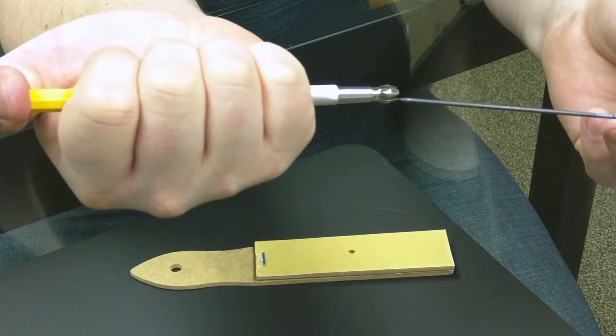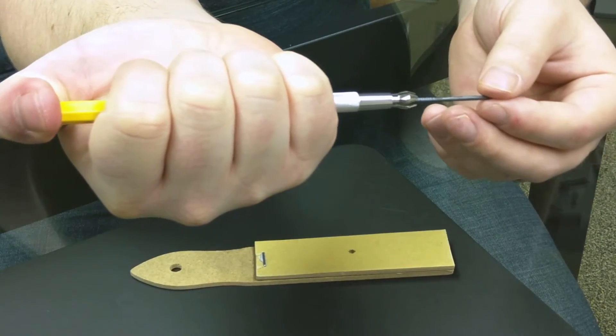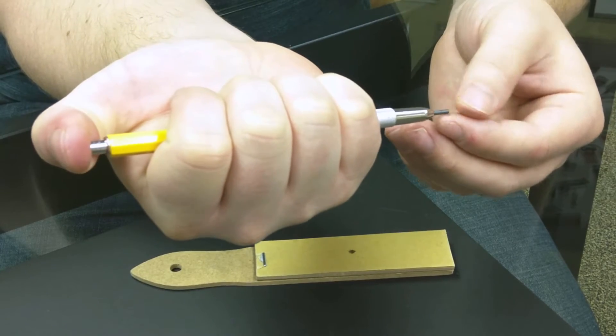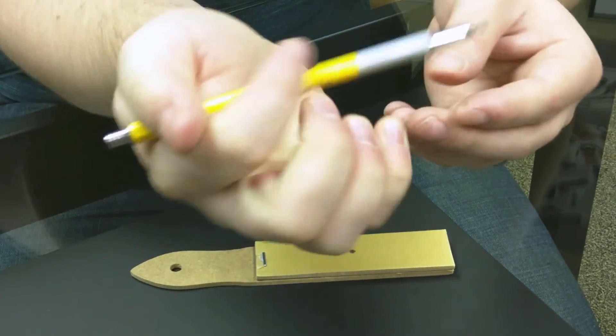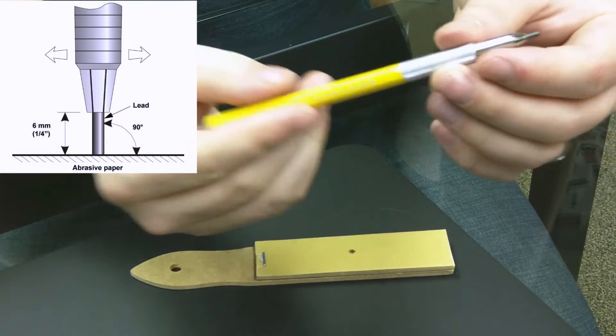During the test, the lead in use must have a flat, smooth, and circular cross section. To achieve this, we rub the lead at a 90 degree angle perpendicular to the abrasive paper that is included with the tester.